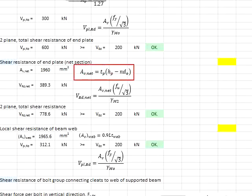Substitute the relevant values, you get the Av,net. And substitute the relevant value of the Av,net, you get 389.3 kN.